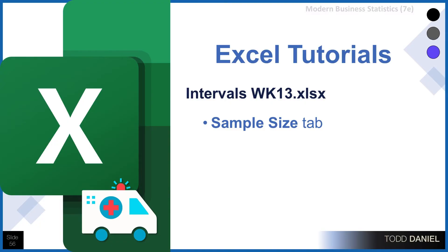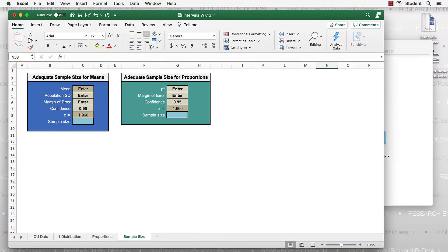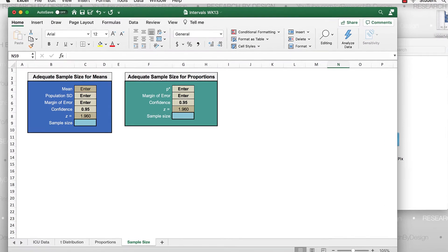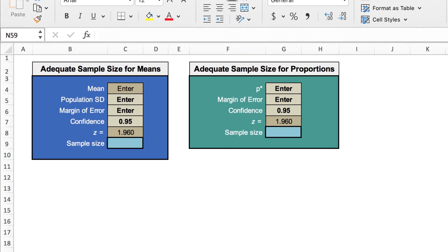Well, to answer that, let's go back to our Week 13 Excel spreadsheet. We'll go to the Sample Size tab. And here we see two boxes. We're going to use the box on the left, the blue box, which is the adequate sample size for the means.